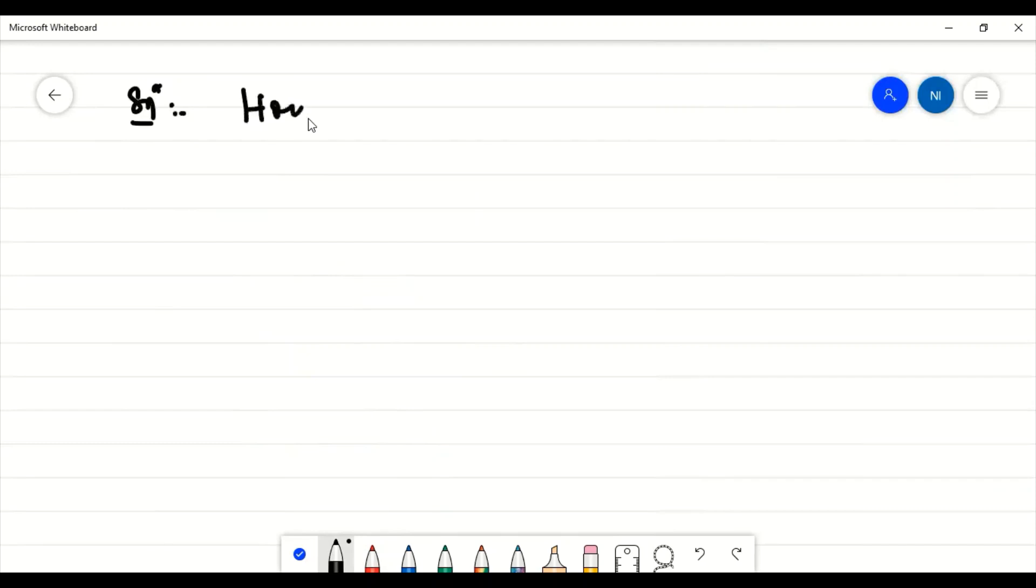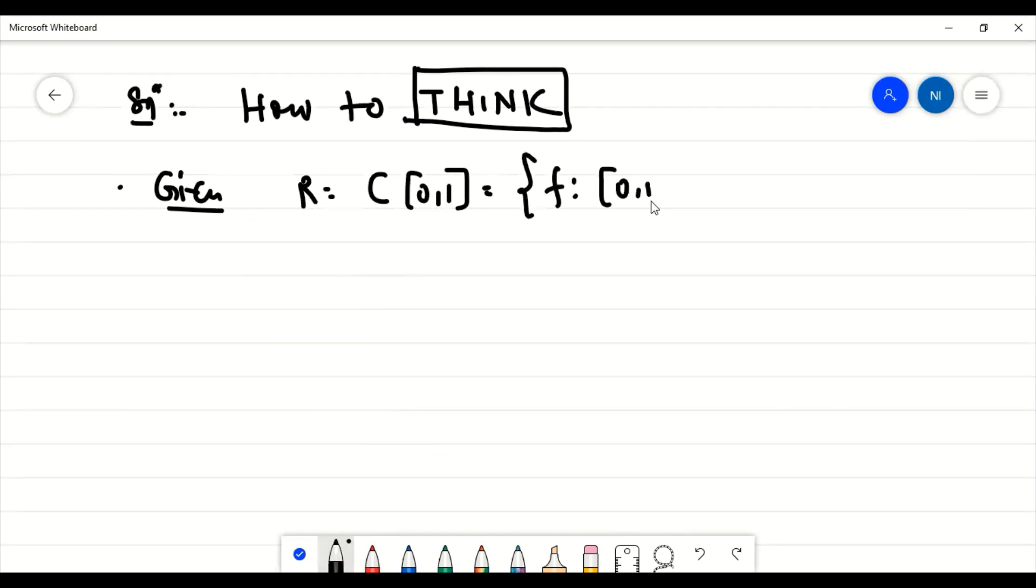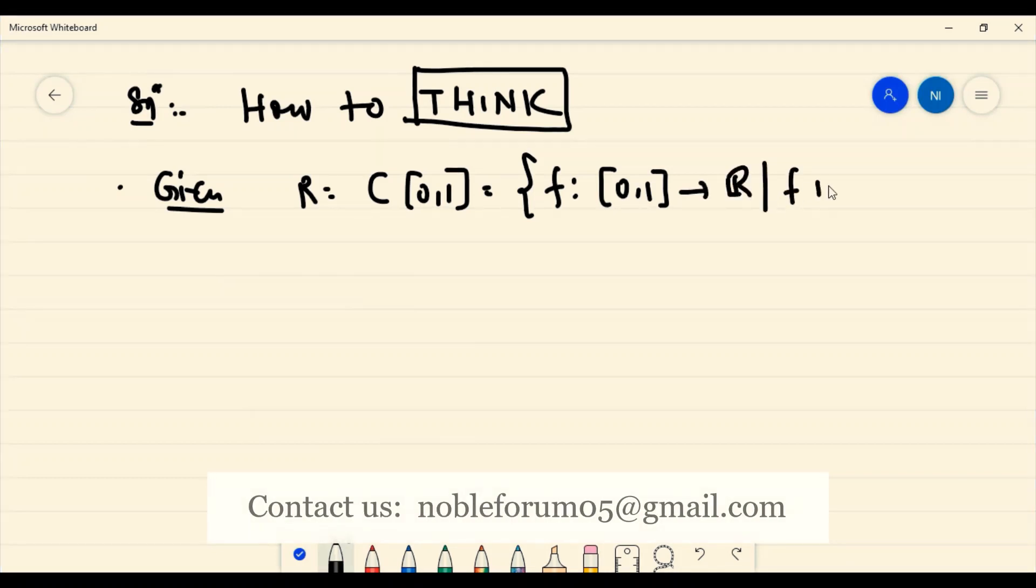How to approach this kind of problem? You are given the ring C[0,1], which is nothing but the set of all continuous functions from the closed interval [0,1] to R, such that f is continuous on [0,1]. You are making it a ring with pointwise addition and pointwise multiplication. So you need to give an ideal which is not maximal.